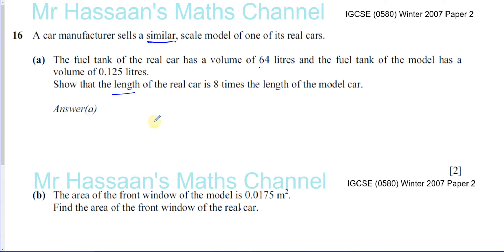So we need to think about the ratio of the volumes of these two cars, the model and the real car. So the volume of the real car divided by the volume of the model car, of the fuel tank part of it, is going to be 64 divided by 0.125.